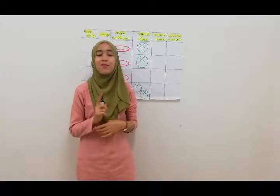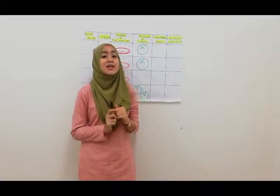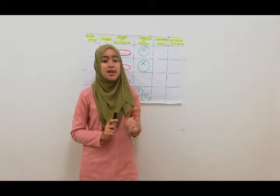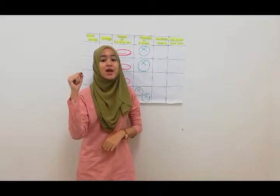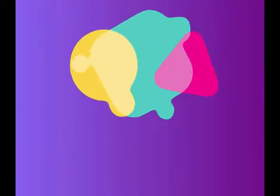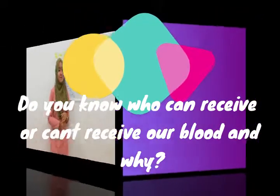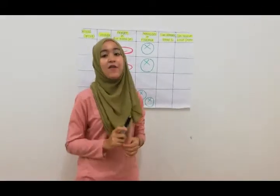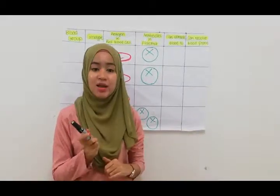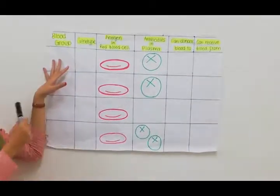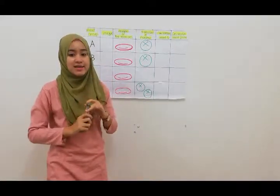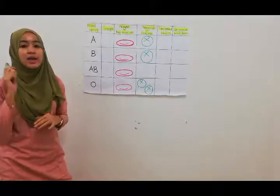Okay guys, in transfusion of blood, a recipient and a donor need to have compatible blood. If not, agglutination of red blood cells could happen. It is because of the reaction between the antibody in blood plasma and the antigen at the surface of the red blood cell membrane. For example, if Aja has blood group A, she could not receive blood from Sarah who has blood group B. Why? Let's study the table.